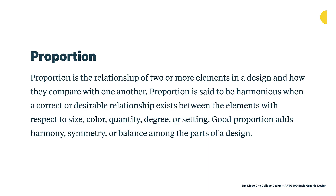The first is the idea of proportion. Proportion is the relationship of two or more elements in a design and how they compare with one another. Proportion is said to be harmonious when a correct or desirable relationship exists between elements with respect to size, color, quantity, degree, or setting. Good proportion adds harmony, symmetry, or balance among the parts of a design, ensuring good balance in your piece and considering the overall unity of what you're going after.